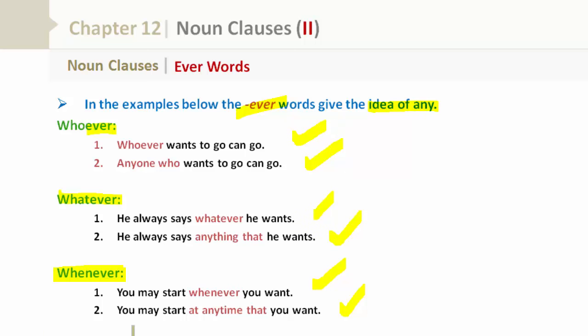Let's look at wherever. She can work wherever she wants to work, or she can work anywhere that she wants to work. Please note that ever words give the idea of any. And each example of one and two, for all of the words, they mean the same thing.